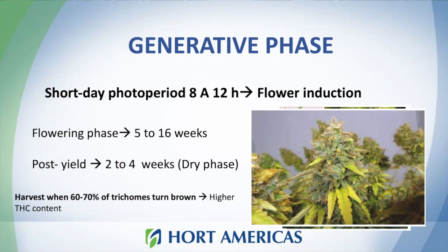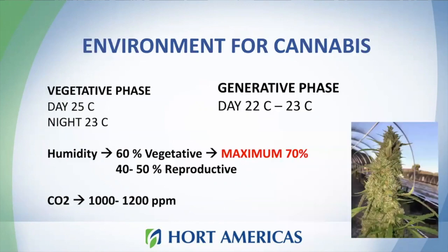As mentioned before, the vegetative phase and generative phase are very sensitive to environmental conditions. Temperature and humidity requirements for this plant are different between the different stages of development. The generative phase requires lower temperature and lower humidity levels.